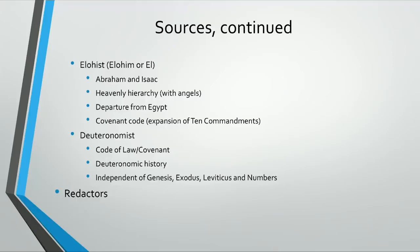And then the final one is the Deuteronomist Code, and it contains the bulk of the law and what's called the Deuteronomic History. And it's independent of Genesis, Exodus, Leviticus, and Numbers.